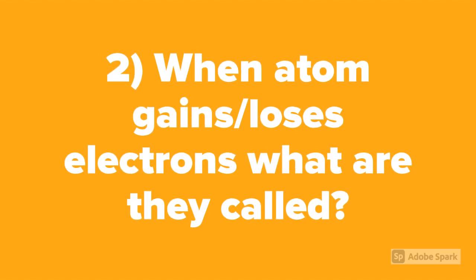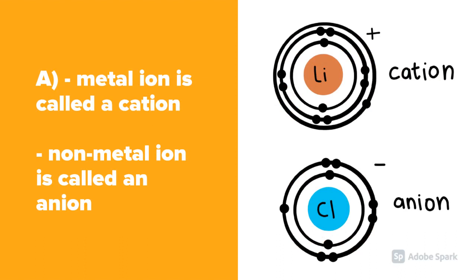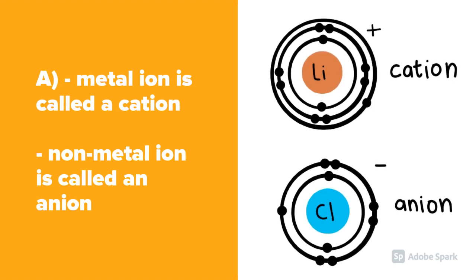Question number 2: When an atom gains or loses electrons, what are they called? A metal ion loses electrons and is called a cation. A non-metal ion gains electrons and is called an anion.